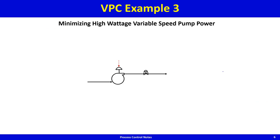Example three: minimizing the power of a high-wattage variable speed pump. Sometimes flow rates in process plants are highly variable — perhaps x at peak, but dropping to x/2 or x/3 at low demand. For high flow rates, pump wattage is high, so a variable speed pump is used so that when flow rate is low, the pump runs at lower RPM and consumes less electricity — similar to inverter air conditioners.